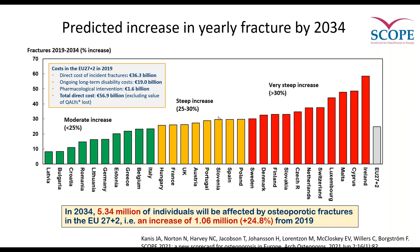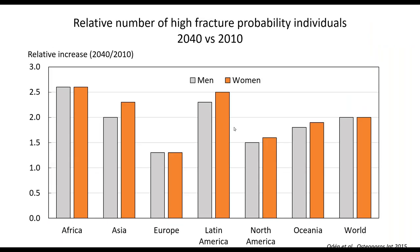We expect an increase in yearly fractures over the next few decades across Europe. When we look at the number of people at high fracture risk — predicated on the FRAX approach where somebody has a fracture probability equivalent to that conferred by a prior fracture — this goes from around 135 million in 2010 to double that in 2040. A lot of that burden will be in lower-middle income countries, so the pattern of osteoporosis may well shift from classic high-income countries.